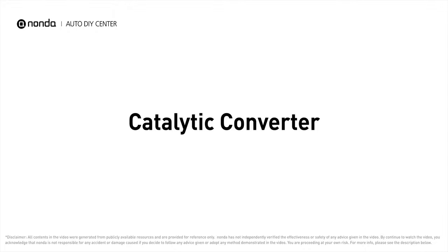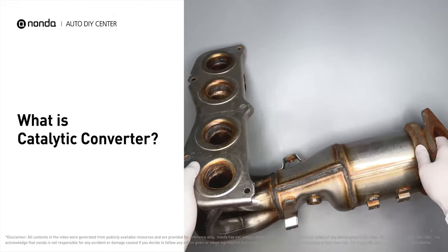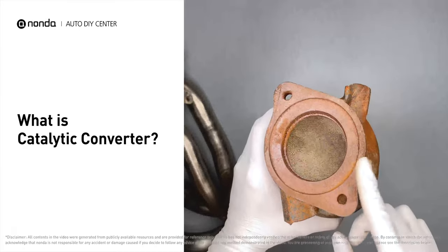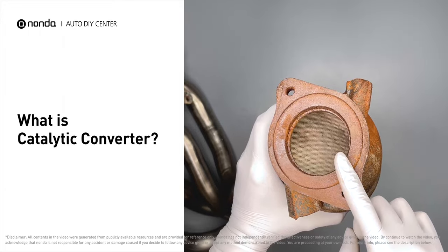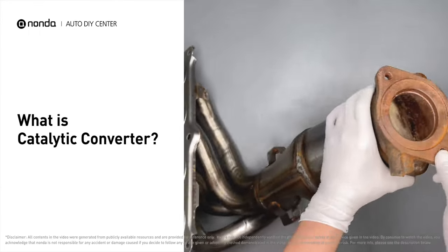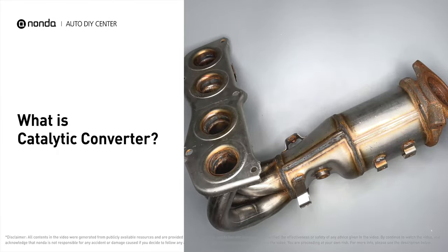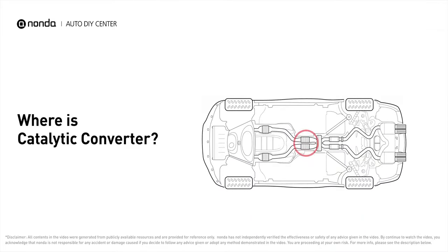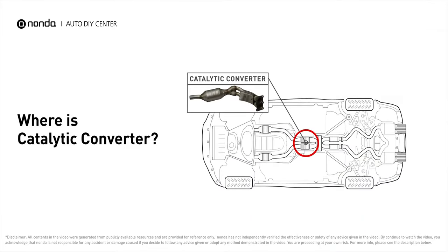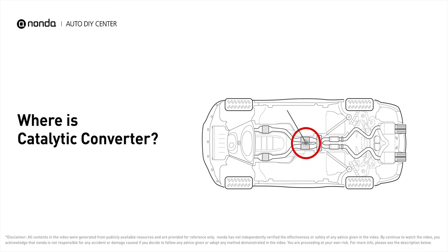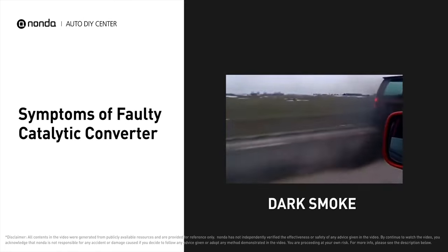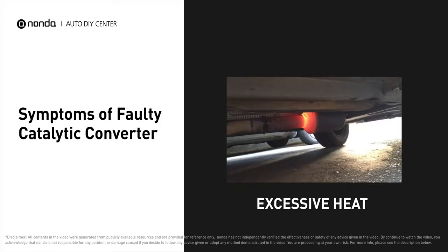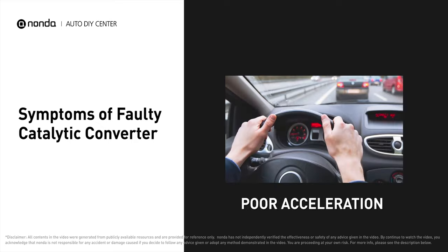A catalytic converter is an exhaust emission control device that consists of a stainless steel shell which encloses a ceramic honeycomb core. This provides the catalyst and changes harmful substances in a car's exhaust gas into less harmful ones like carbon dioxide and water vapor by means of chemical reactions. They are usually located in a box on the exhaust pipe under your car. A faulty catalytic converter causes dark polluted smoke from the exhaust pipes, generates excessive heat under the vehicle, and you may experience poor acceleration while driving.